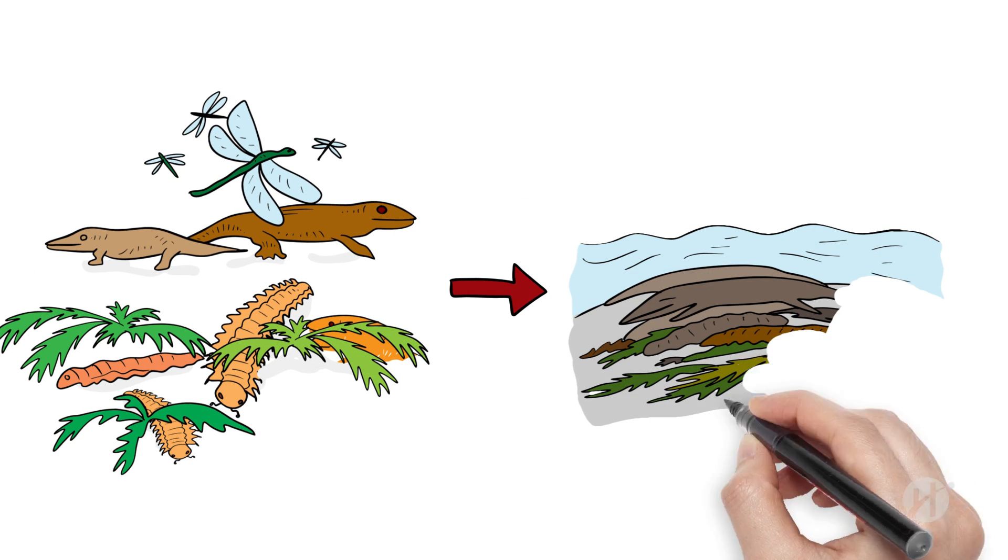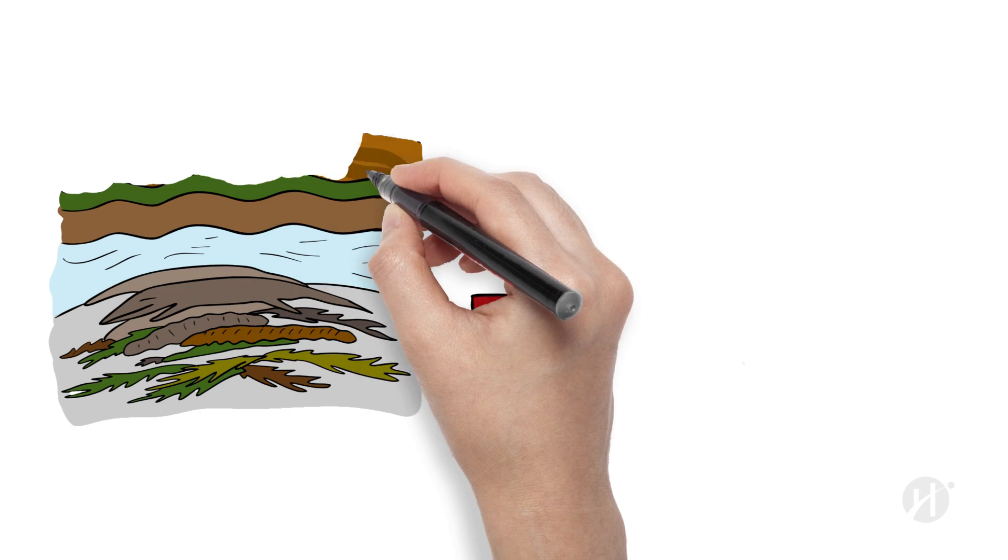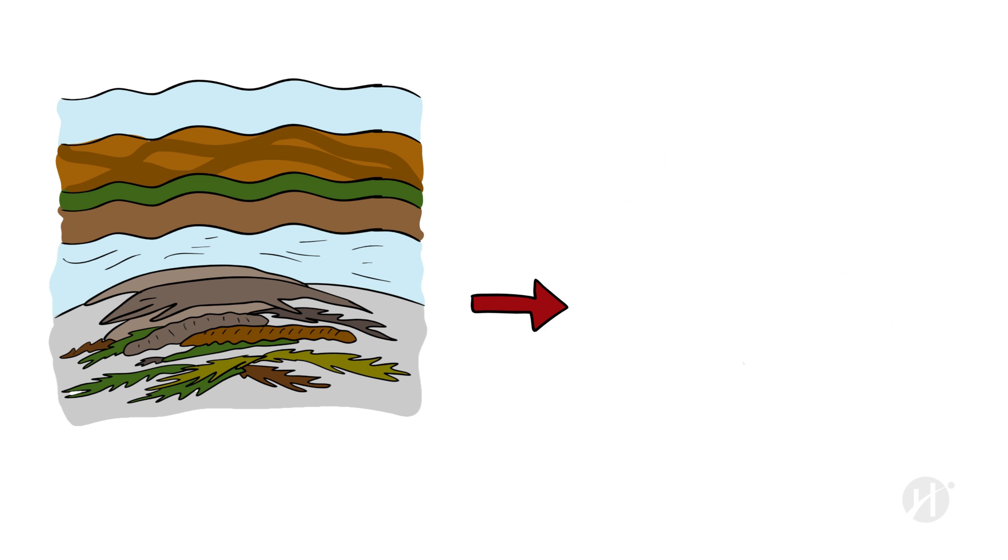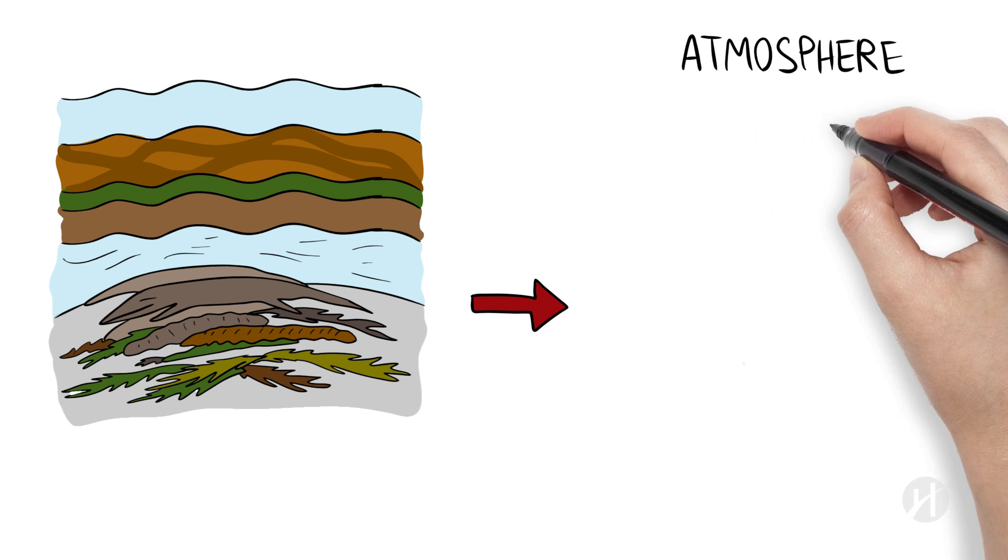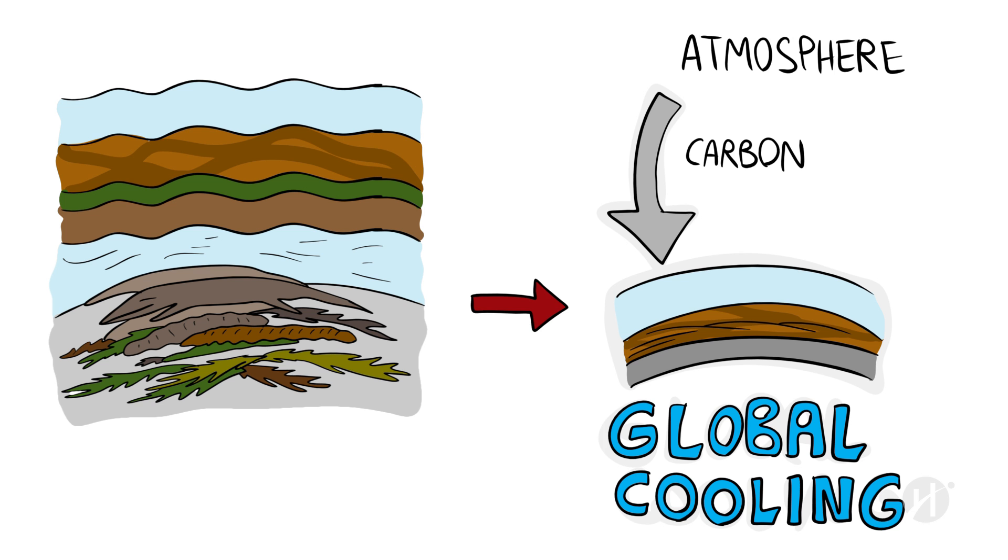When these abundant organisms died, their remains accumulated more quickly than they could decay. With higher sea levels at the time, the land often flooded, which also reduced the rate of decay. With each growing cycle, and layers of dead organisms continuing to build up, more carbon was removed from the atmosphere and buried in the bodies of dead organisms, which eventually contributed to global cooling at the end of the Carboniferous period.